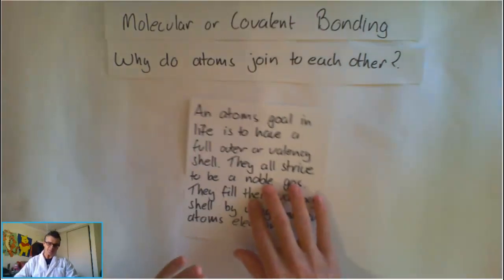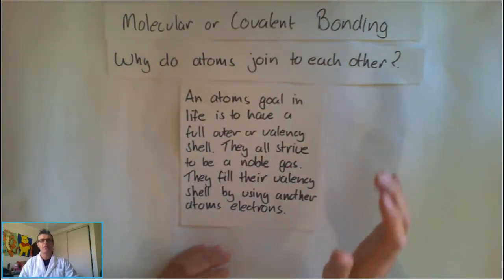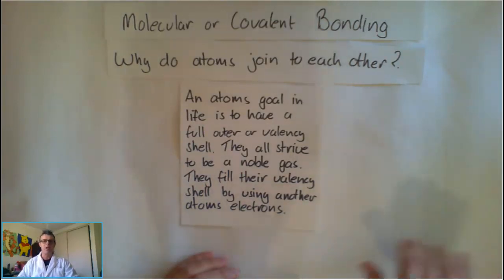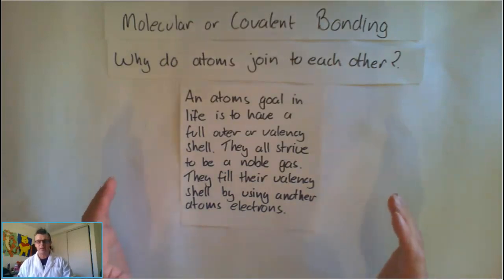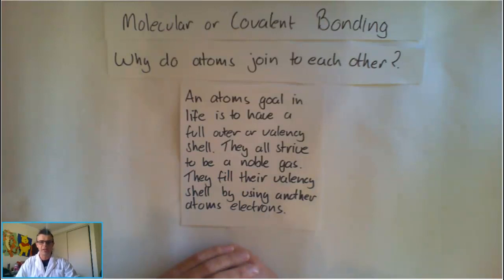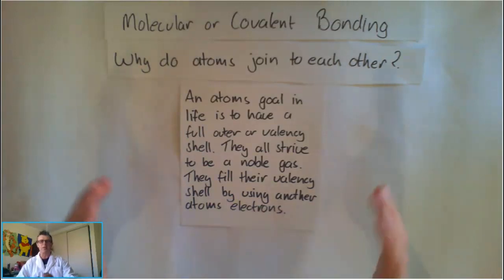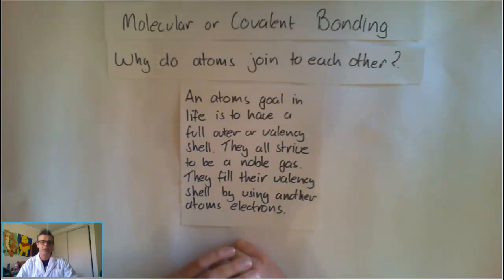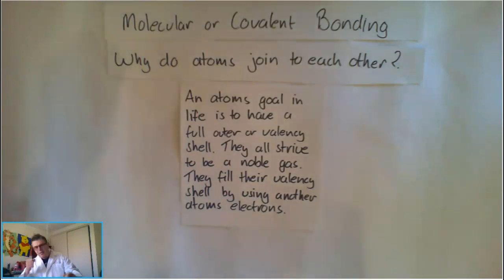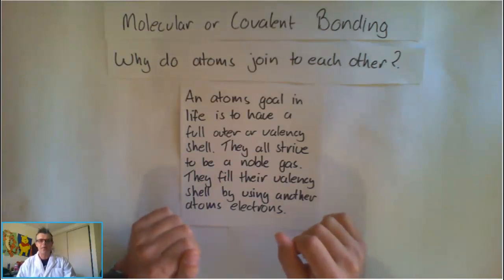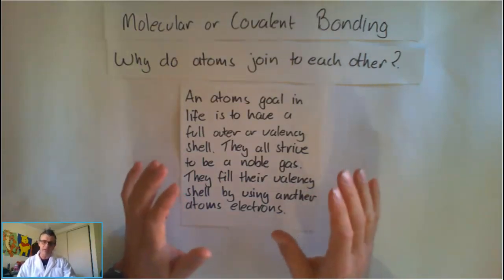We need to remember that an atom's goal in life is to have a full outer or valency shell. So remembering that when we do our Bohr model, we're talking about that outer ring that has electrons in it. They all want to have a full valency shell. So they all strive to be a noble gas, essentially, which means they all have their outer valency shell filled up. Once they do this, they can do their little happy dance and retire. That's their whole goal in life - to fill that outer valency shell. Otherwise, they just go through life really, really sad.